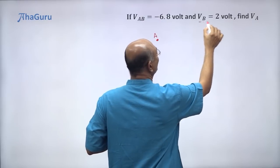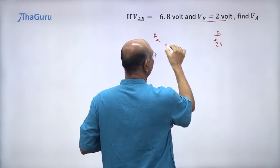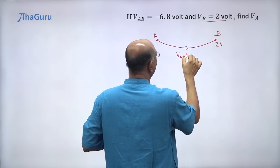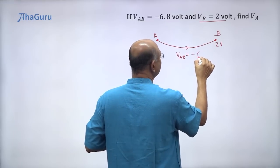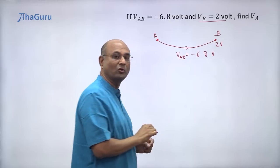So at B, the potential is 2 volts. So this is 2 volts and when you're going from A to B, VAB is given. How much is VAB? Minus 6.8 volts. So we've been told all this information.